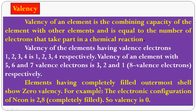Elements having a completely filled outermost shell show valence 0. For example, noble gases — helium, neon, argon, krypton, xenon, radon — are called rare gases or inert gases. They have a complete outermost shell containing 8 electrons. For example, neon has electronic configuration 2, 8 — a completely filled outermost shell — so its valence is 8 minus 8 = 0. The valence of all elements in the rare gases group is 0.